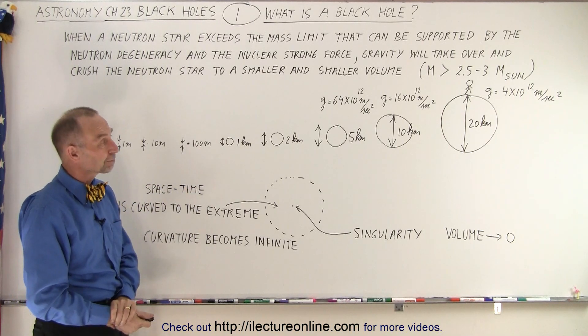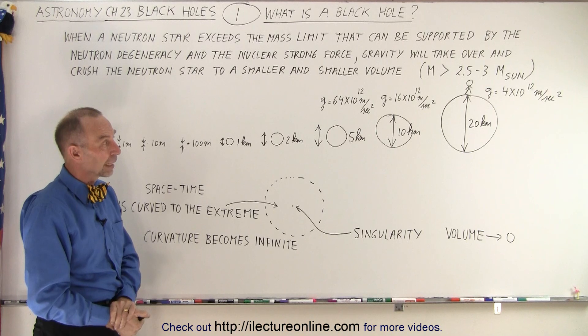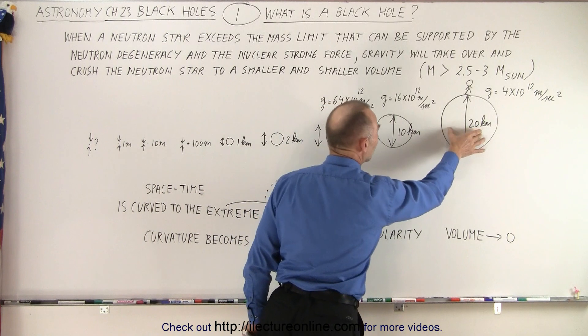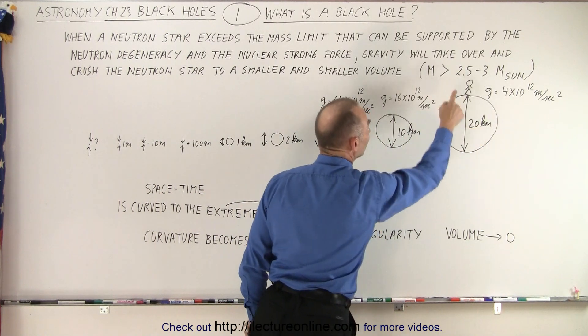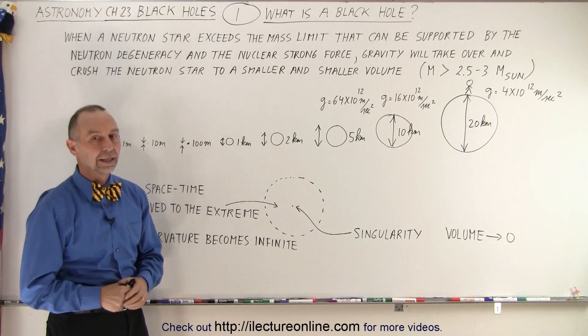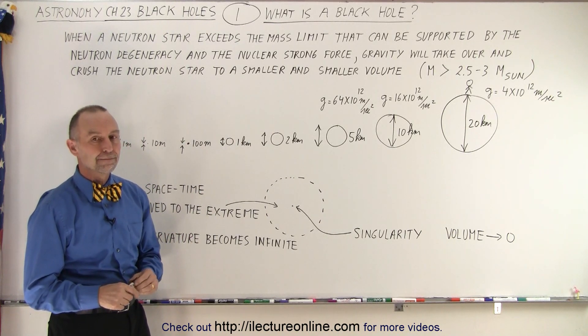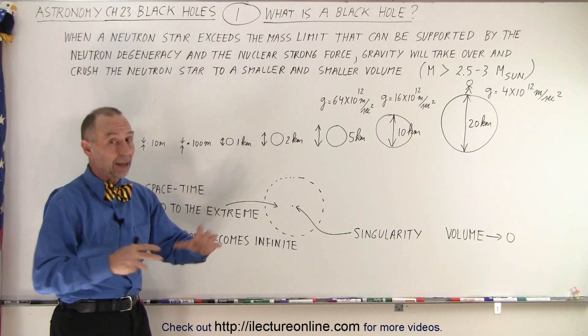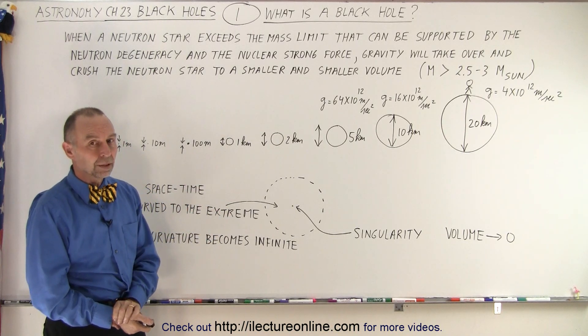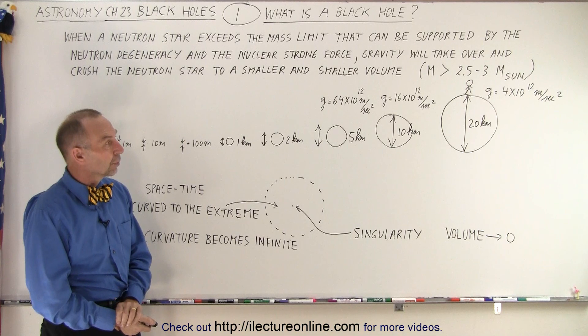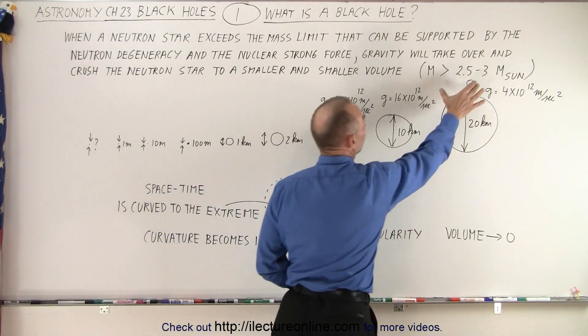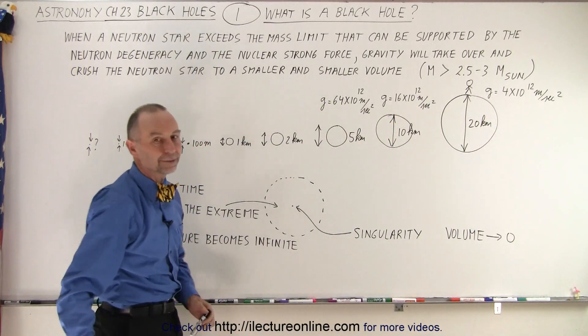But I thought you said a neutron star doesn't become a black hole. It will become a black hole if, for some reason, the mass is increased to the point where it exceeds 2.5 to 3 times the mass of the sun. At that point, it will collapse. But the diameter doesn't change? Well, once it begins to collapse, the diameter will continue to get smaller and smaller. Yeah, but at that point, you have a diameter that's 20 kilometers. So, it starts at 20 kilometers, and once we get to this point, then we start following down in this path right here.